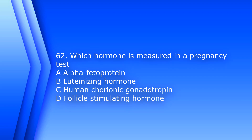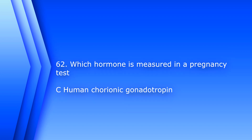Question 62. Which hormone is measured in a pregnancy test? A. Alpha-fetoprotein, B. Luteinizing hormone, C. Human chorionic gonadotropin, D. Follicle stimulating hormone. The answer is C, Human chorionic gonadotropin, or HCG.